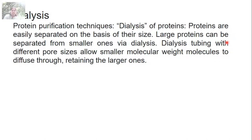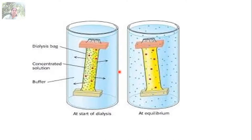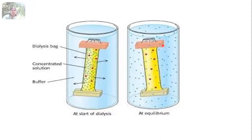After the salting-out method, you proceed to dialysis. Dialysis is a technique where proteins are separated on the basis of their size. Large proteins can be separated from smaller ones via dialysis tubing with different pore sizes, which allows smaller molecules to diffuse through while retaining the larger ones. The protein-salt mixture from salting out is placed in a dialysis bag; when placed in distilled water, smaller molecules diffuse out while larger ones are retained. After collection, you proceed to further purification.